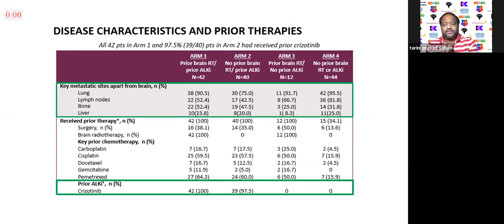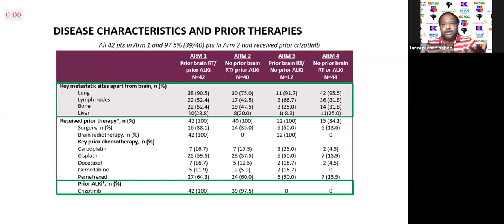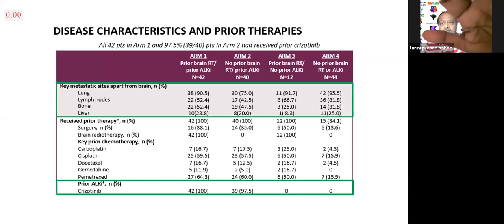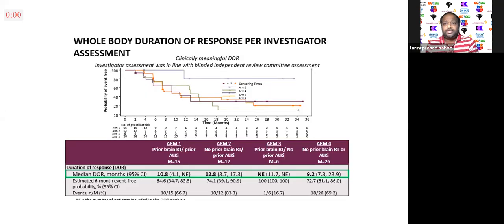ASCEND-7 was a four-arm study. Arm A had prior radiotherapy and prior ALK therapy. Arm B had no prior radiotherapy but prior ALK therapy. Arm C had prior radiotherapy but no prior ALK. Arm D had neither prior radiotherapy nor prior ALK. The median disease control was nearly the same across arms, except arm C with fewer patients was not reached or evaluated.